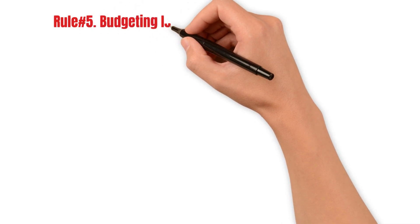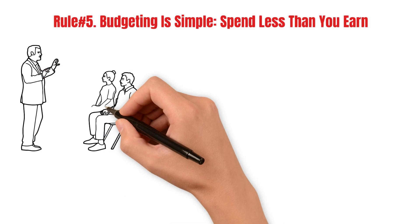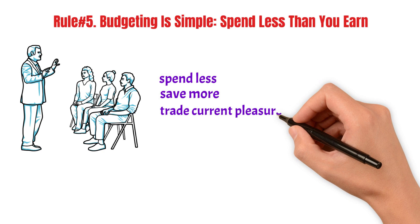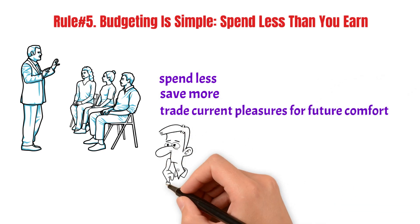Rule number five: Budgeting is simple. Spend less than you earn. Every lesson on personal finance begins with the need to spend less, save more, and trade current pleasures for future comfort. But does that mean living a miserly life? Where should you draw the line?